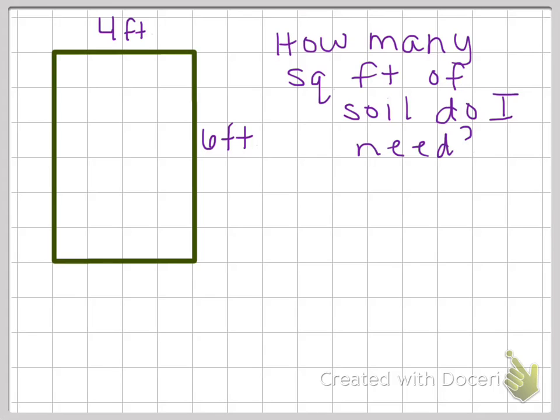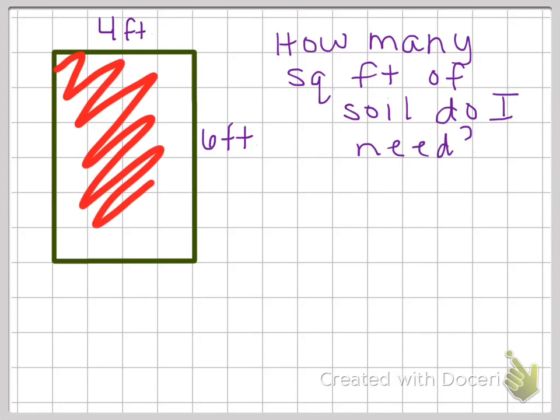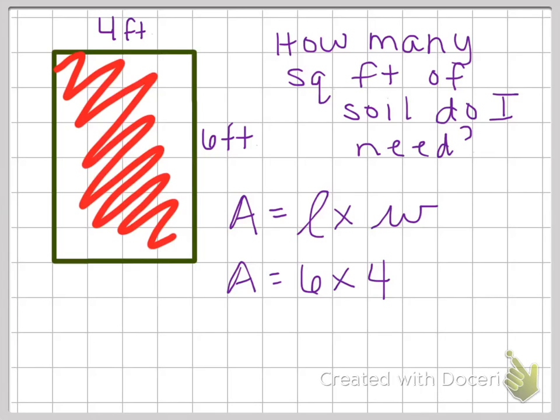So this problem is asking about the inside of the garden, the inside. We want to know how many square feet of soil I would need to put down for my garden. Well, we know that the formula for area, and I'm going to back up. I know I'm looking for area because I'm looking for the inside. So that means I need to find the area of the figure. So the formula for area is length times width. So I'm going to plug my numbers in. The area equals six times four. So the area is 24 square feet.